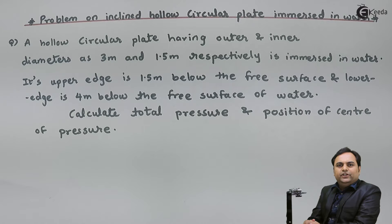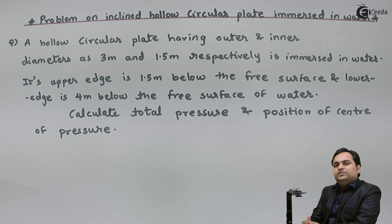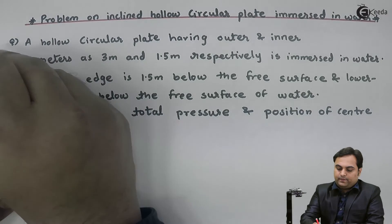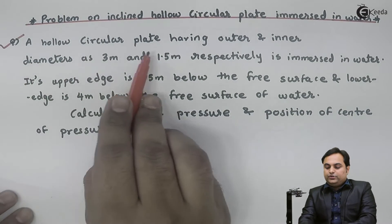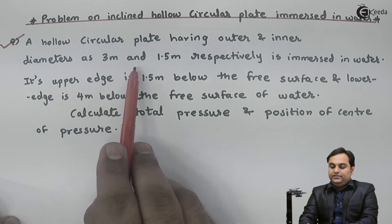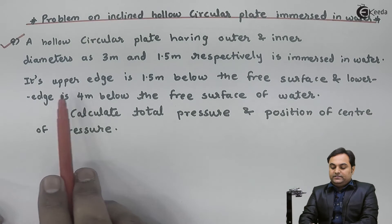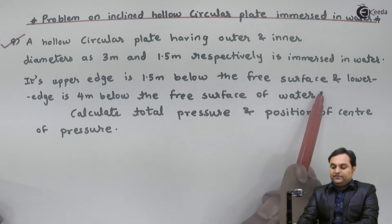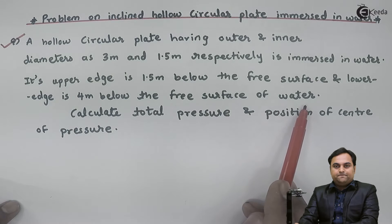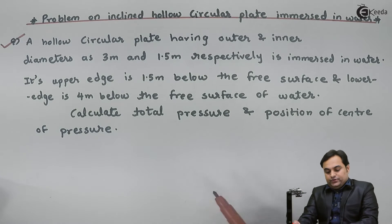In this video we will see a problem of an inclined hollow circular plate submerged in water. A hollow circular plate having outer and inner diameters of 3 meter and 1.5 meter respectively is submerged in water. Its upper edge is 1.5 meter below the free surface and lower edge is 4 meter below the free surface. Calculate total pressure and position of center of pressure.